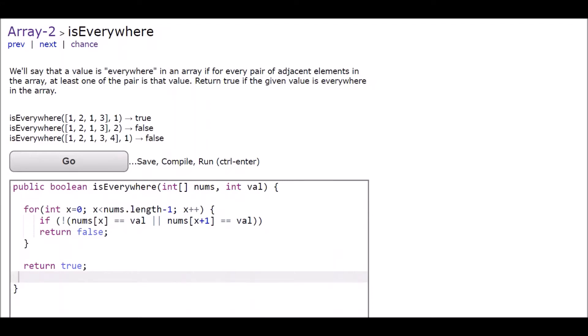This is my solution to coding that array two is everywhere. So a value is said to be everywhere.